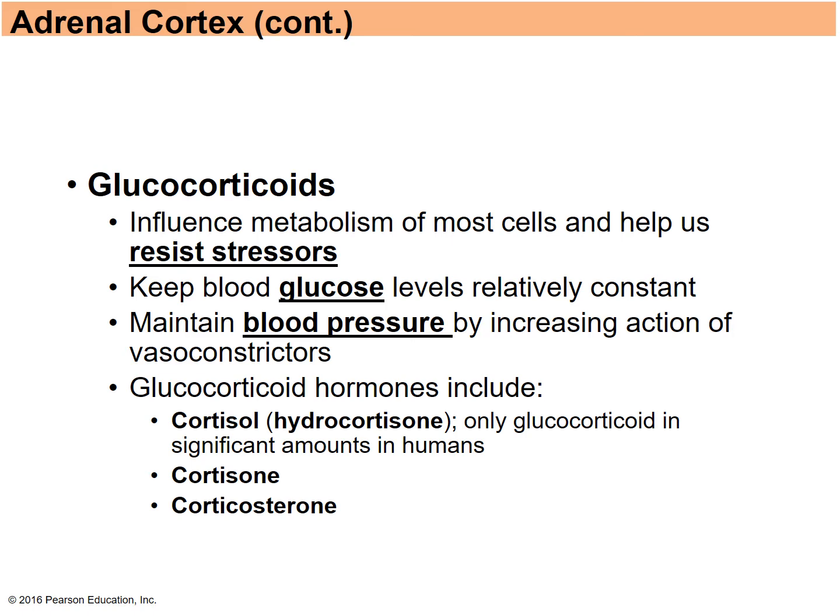Glucocorticoids influence metabolism among cells, help resist stressors, and maintain blood glucose levels at a fairly constant level — you don't want spikes or big dips. They also play a role in blood pressure. Glucocorticoid hormones include cortisol, also known as hydrocortisone, cortisone, and corticosterone.